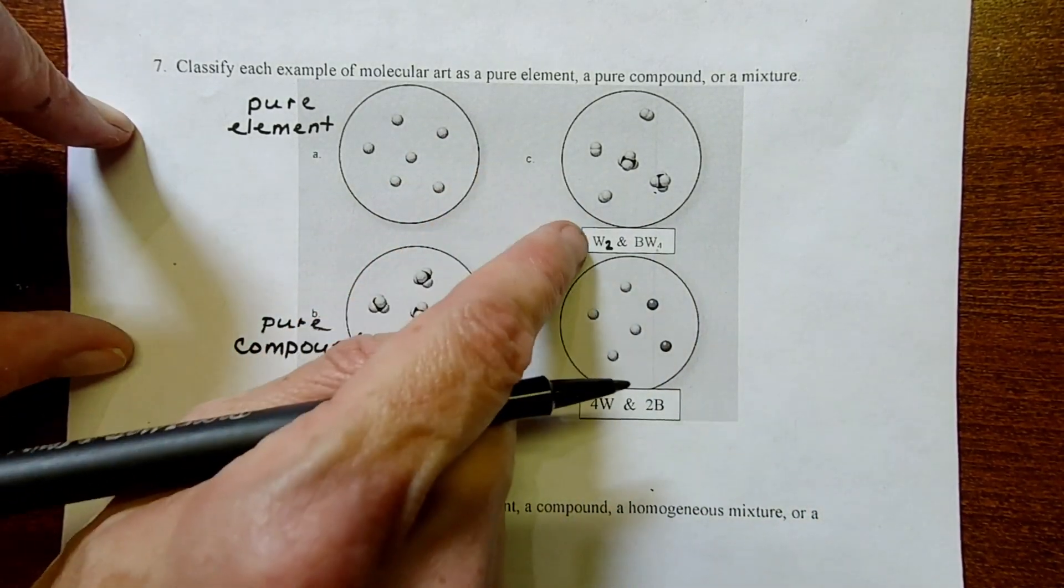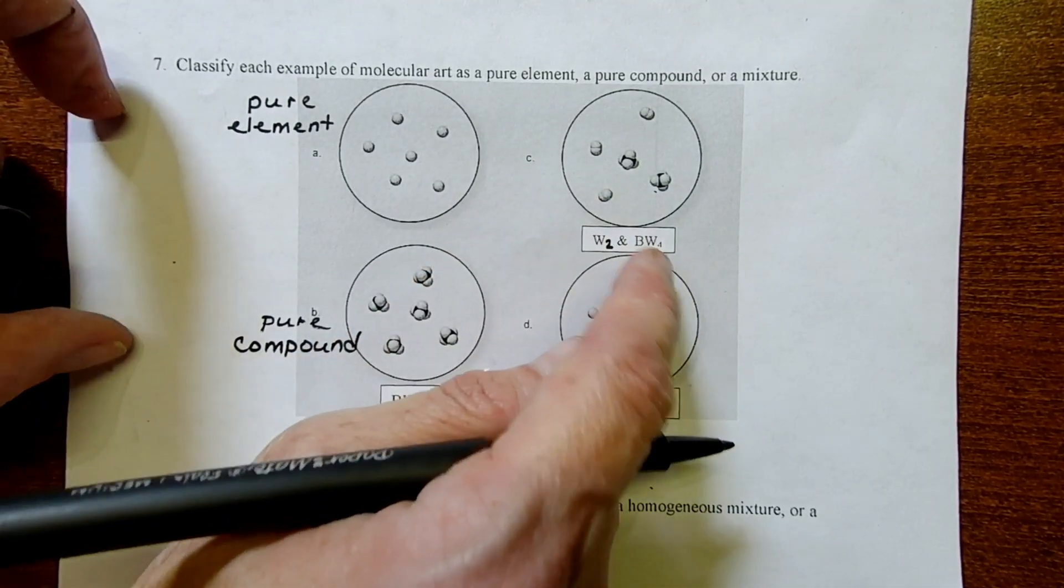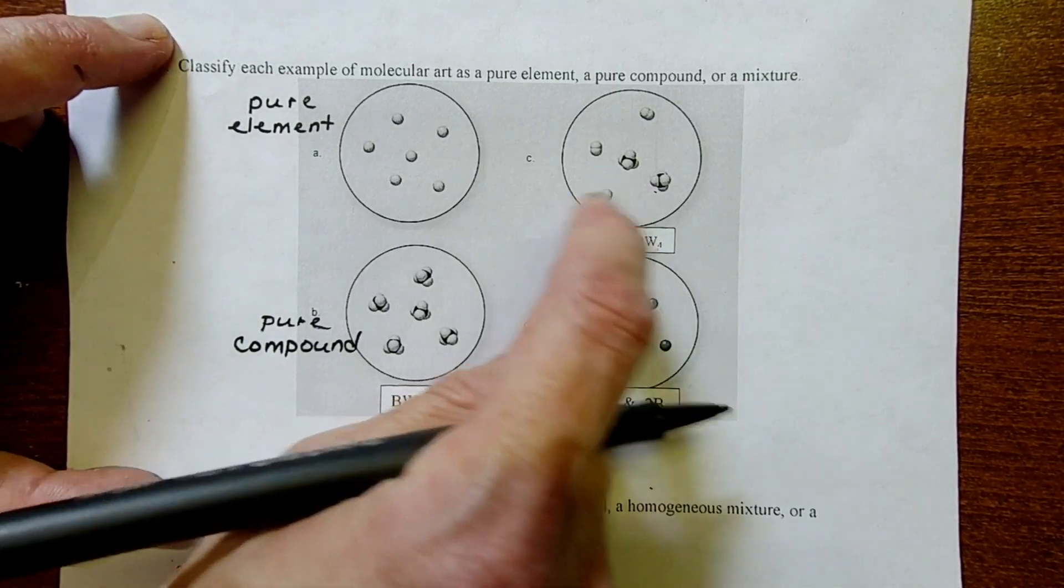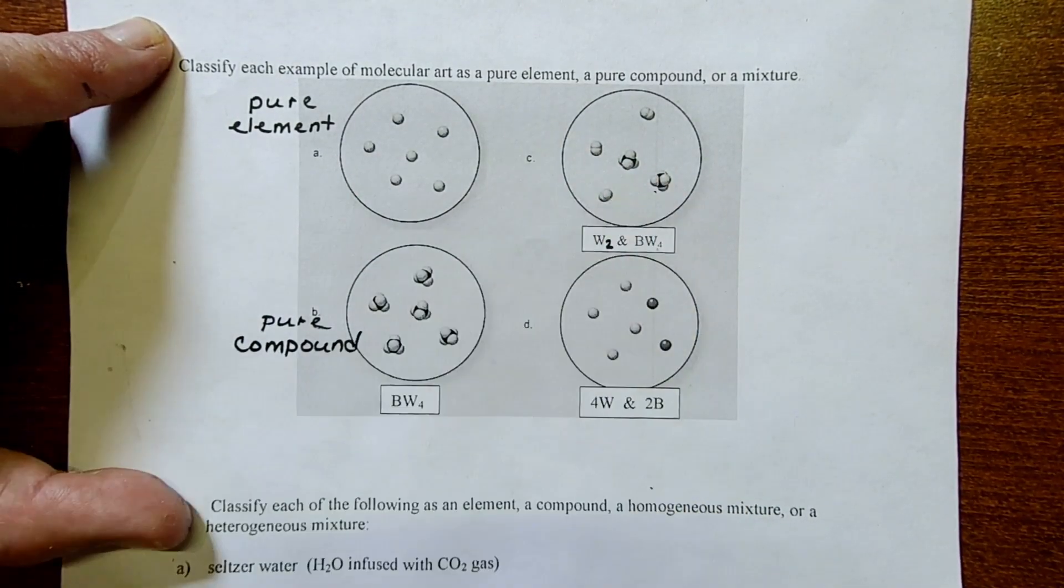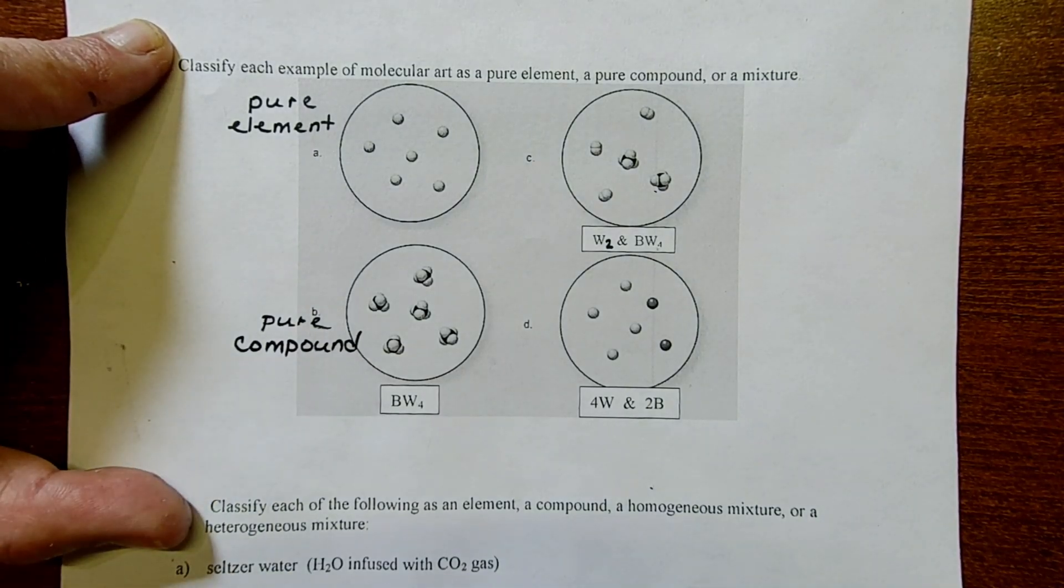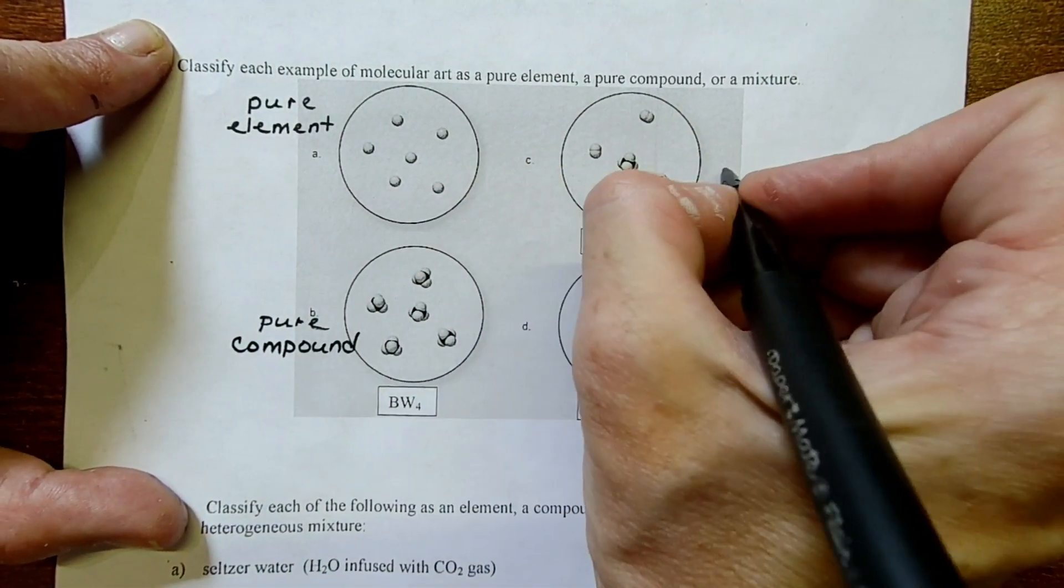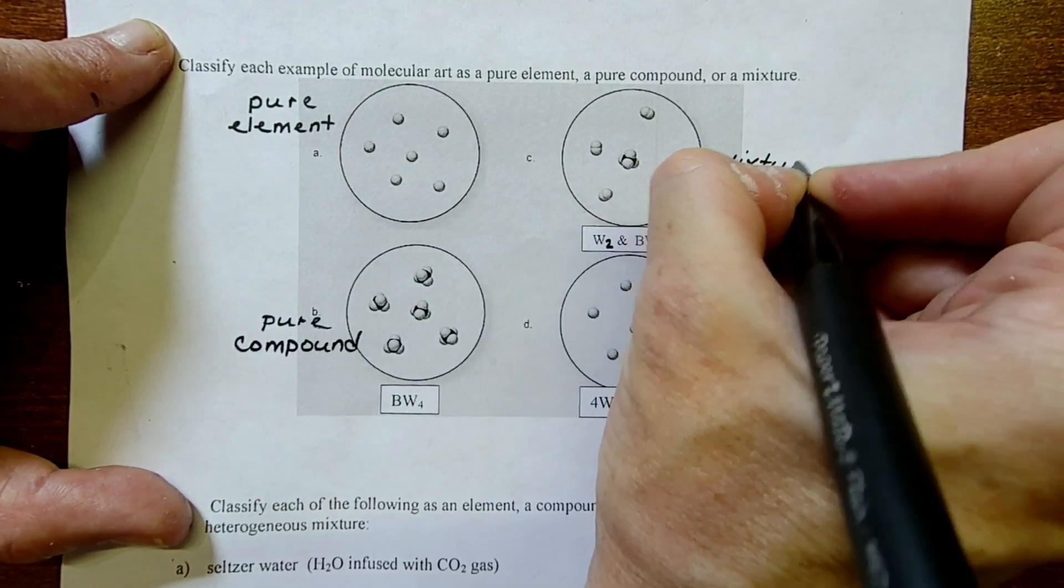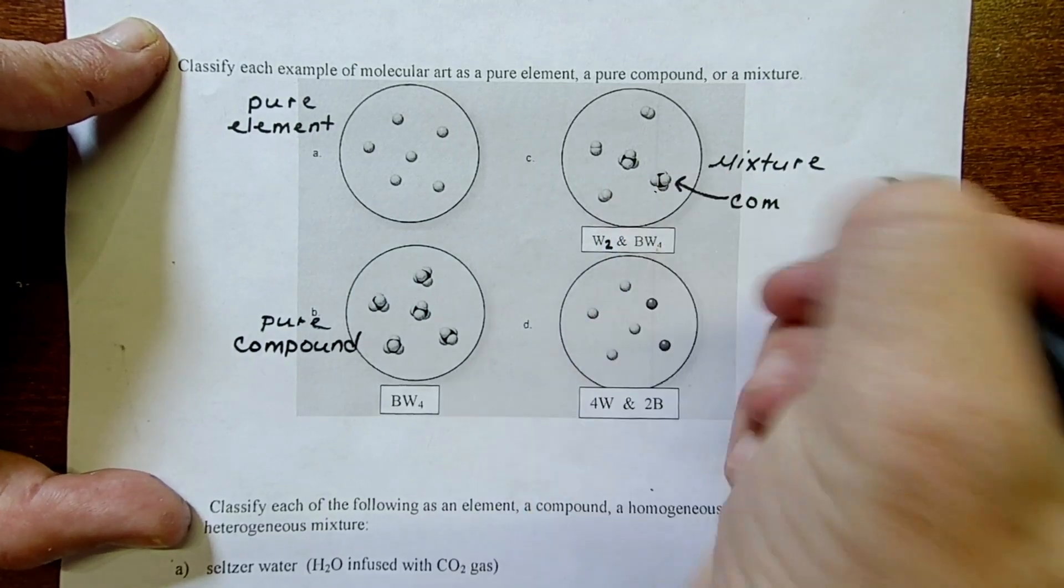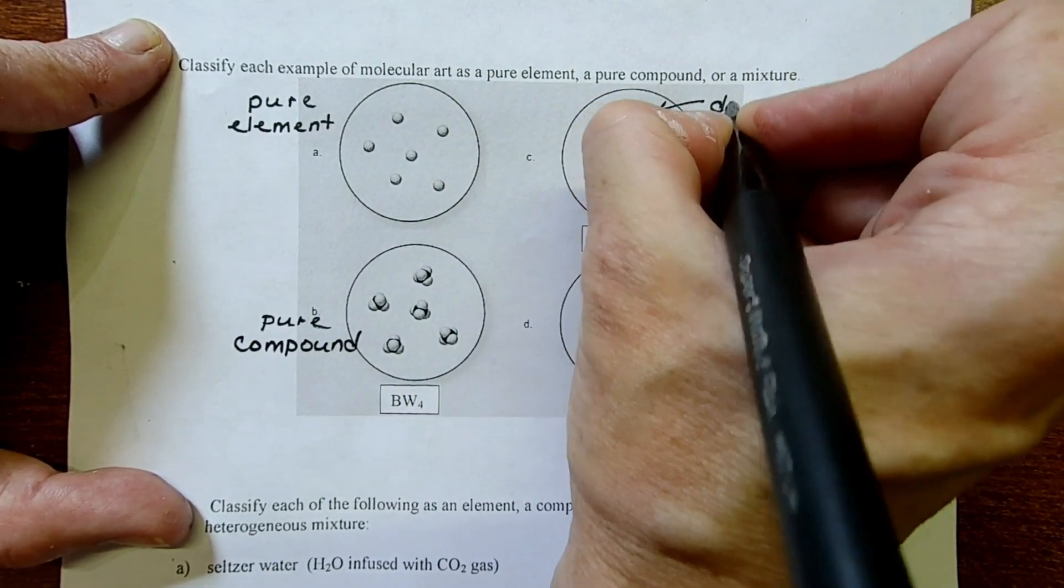In letter C, we have some diatomic W2, so two white spheres connected, and then some of that same molecule that we just saw in letter B. So we have two different kinds of things going on. You can imagine sitting here and putting all of the diatomic white molecules or compounds in one pile, and then all of the larger ones in another pile. We can physically separate these two types of things, so that makes it a mixture. We don't have to classify it any further, but we should feel confident we could label this BW4 as a compound, and the two white spheres represent some kind of diatomic element.